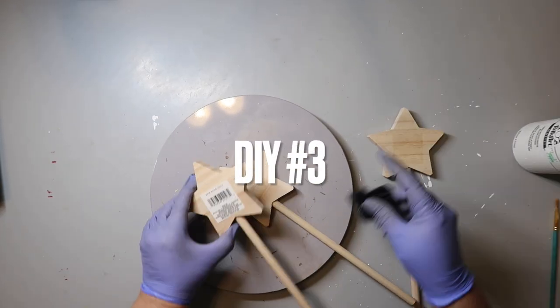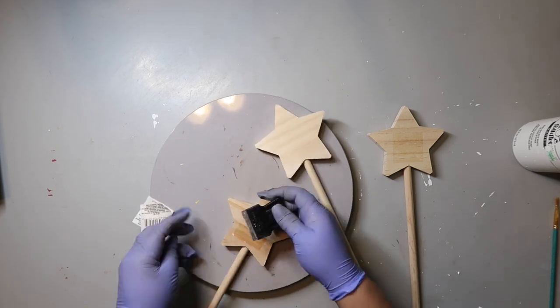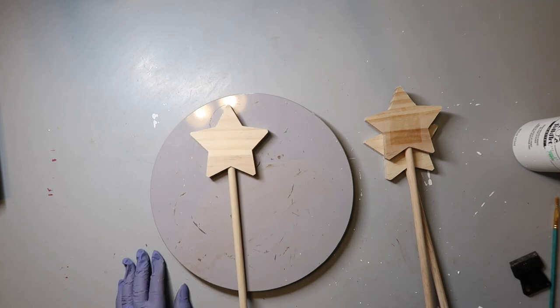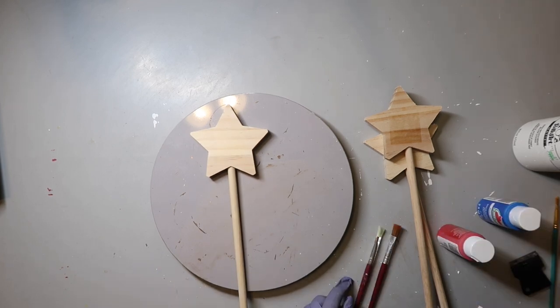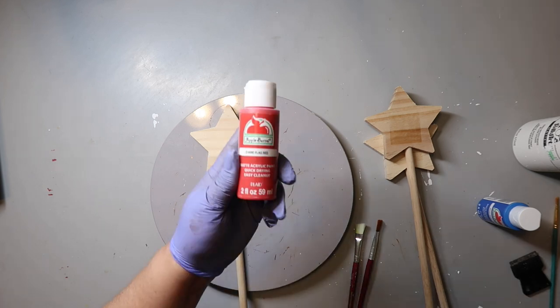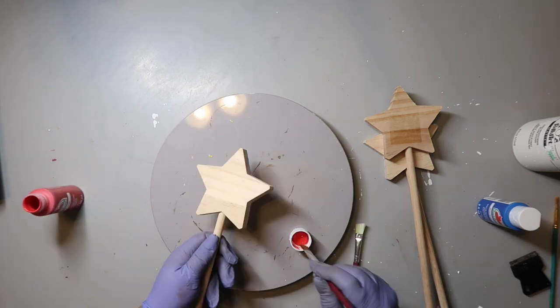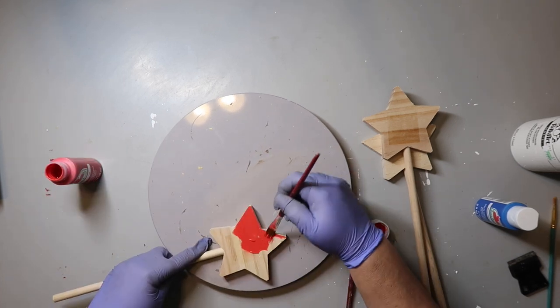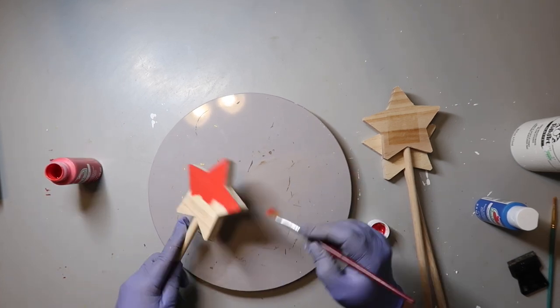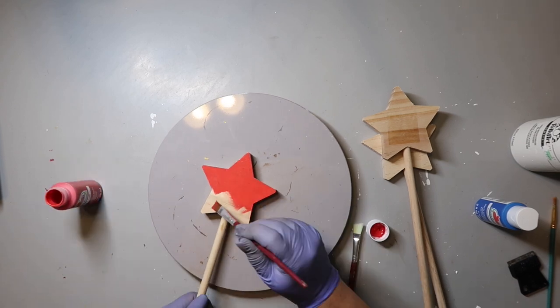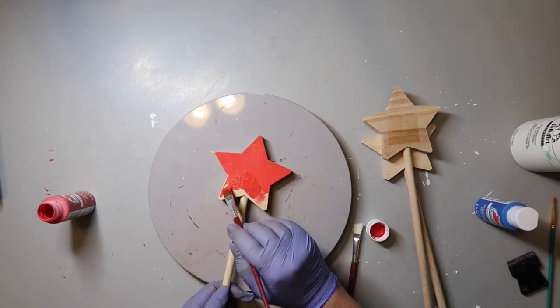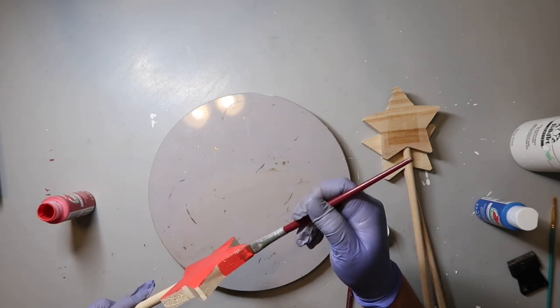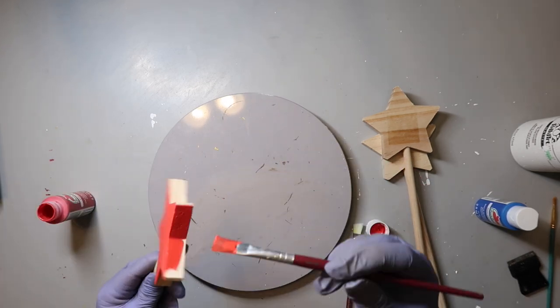DIY number three. I've got these three stars from Dollar Tree and of course I'm taking off that - I always hate when people leave on stickers, just a little pet peeve of mine. I'm painting the middle section black, red, and blue, painting front, back, and the sides, and even the little handle all with the same color. There's not much more to say about it. Then the next one is going to be white.